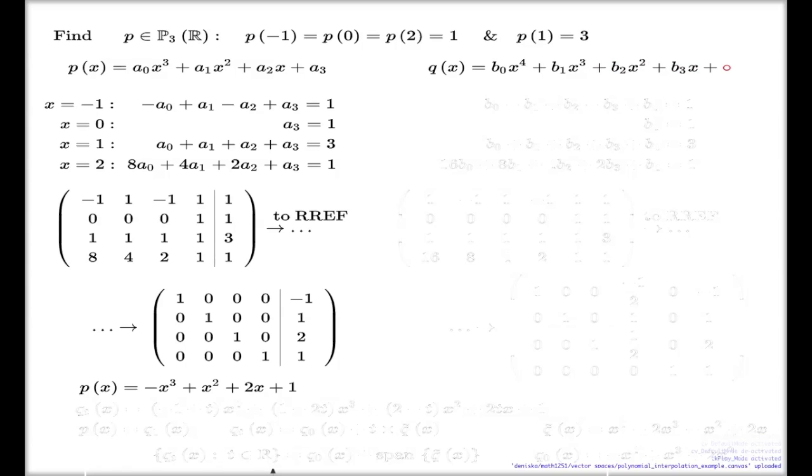Like this: b0 x⁴, b1 x³, b2 x², b3 x, and b4. You see now we're looking at a polynomial of degree 4.